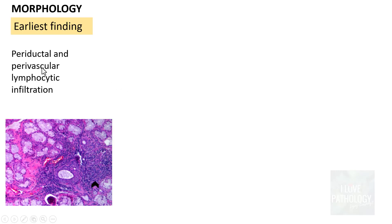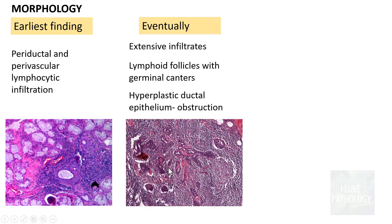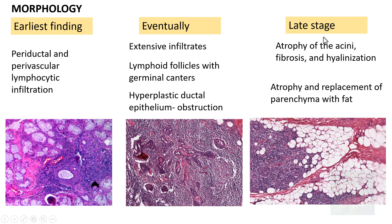Histopathologically, the earliest finding is periductal and perivascular lymphocytic infiltration around the salivary glandular acini and blood vessels. This eventually leads to extensive infiltration, and sometimes germinal centers can be seen. The ductal epithelium can become hyperplastic, leading to obstruction. In later stages, there is atrophy of the acini, fibrosis or hyalinization, and the parenchyma of the salivary and lacrimal glands may be replaced with fat.